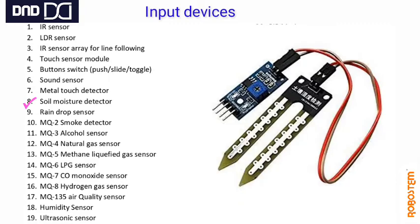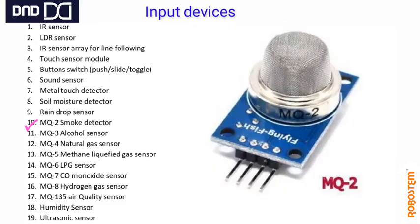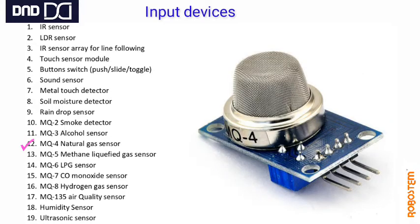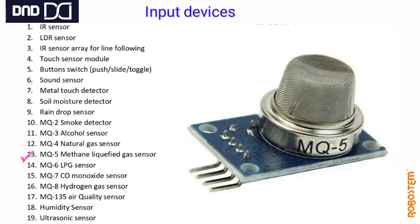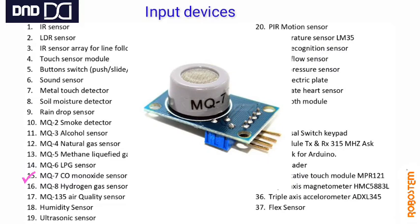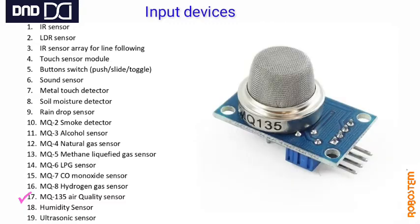This is a metal touch detector — not a metal detector, but a metal touch detector. Soil moisture sensor detects soil moisture. This is a rain drop sensor — any water droplets that fall on it will be sensed. This is the MQ series: MQ2 is a smoke detector, MQ3 is an alcohol sensor, MQ4 is a natural gas sensor. These all look the same but you identify them by the numbers written on the steel part. MQ5 is an LPG sensor, MQ6 is also LPG, MQ7 is a carbon monoxide sensor, MQ8 is a hydrogen gas detector.